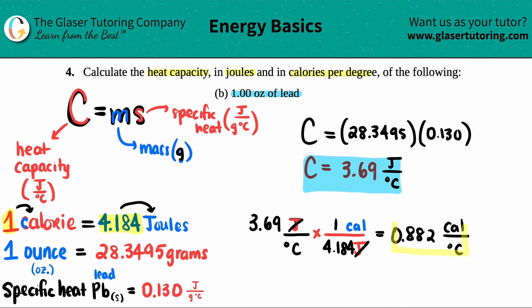Keeping with the three sig figs, we get 0.882 in calorie per degree Celsius. And that's it. Here are your two answers: one's in joule per degree Celsius, the other in calorie per degree Celsius, but both of these are heat capacities.